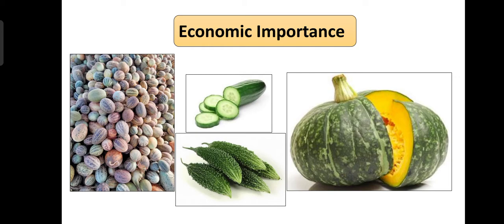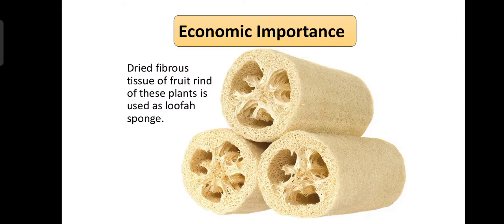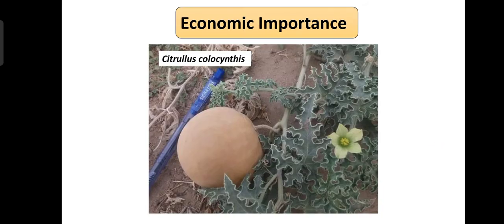Economic importance of family Cucurbitaceae: The members of this family provide a large number of fruits which can be eaten raw as well as cooked. Mature bottle gourds are often dried to produce novel items such as musical instruments and containers. Dried fibrous fibers of loofah plants are used as a sponge. Others are highly medicinal — for example, Citrullus colocynthis. For more information about Citrullus colocynthis, a link has been provided in the description.